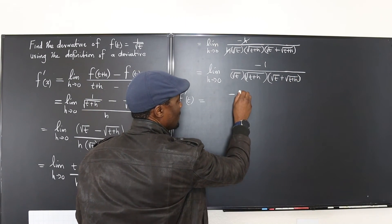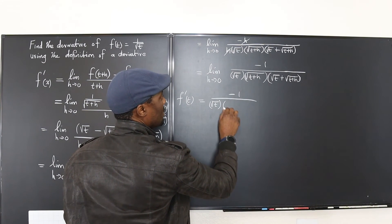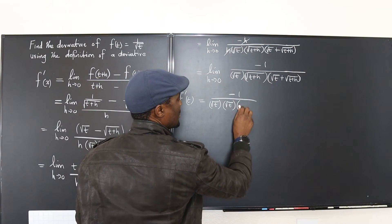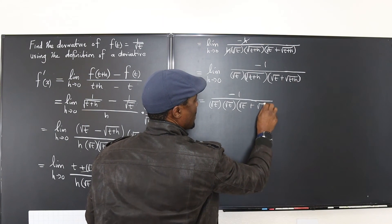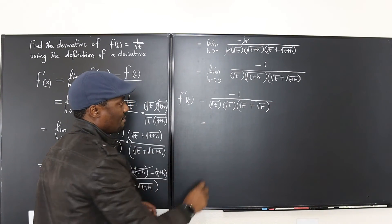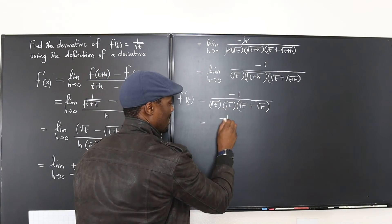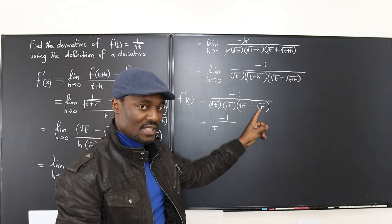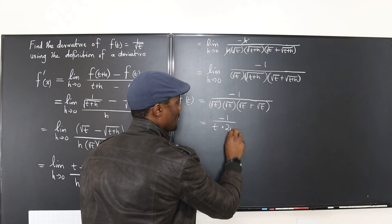So we're going to have negative 1 over square root of t multiplied by — if h goes to zero, what you have left is just square root of t — and then square root of t plus, if h goes to zero, square root of t also. Square root of t times square root of t is t, so this gives negative 1 over t. And square root of t plus square root of t is 2 square root of t, so it's multiplied by 2 square root of t.